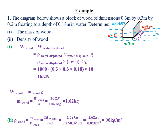Remember, most students confuse this and use 0.2. We can only use 0.2 meters when finding the weight of the water displaced if the whole block of wood is submerged in water. But here only 0.18 meters of the block is submerged. Therefore, for the height we use 0.18 meters. So: 1,000 × 0.3 × 0.3 × 0.18 × 10, you obtain the weight of the block of wood as 16.2 Newtons.